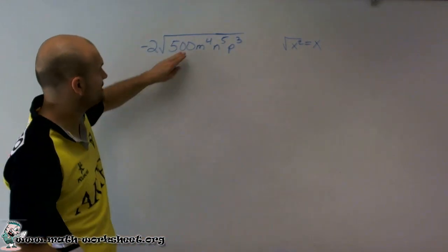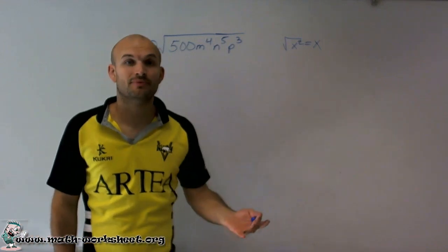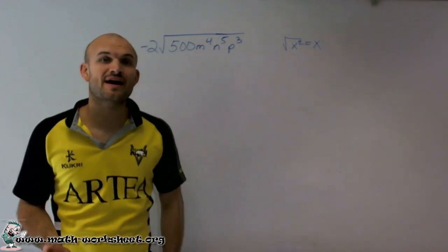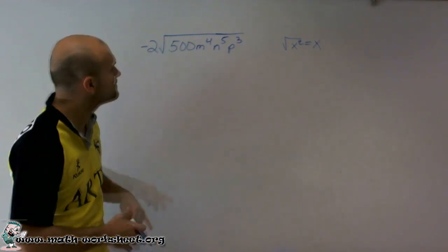So right here I have 500. And if you take a look at it, 500 is not a square number. It doesn't have two factors that are exactly the same that you can multiply by themselves to give you 500.